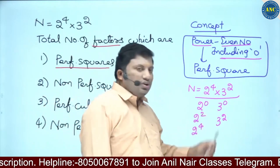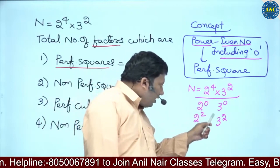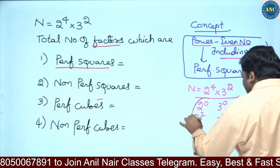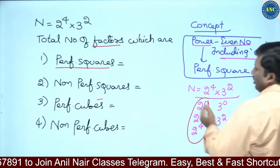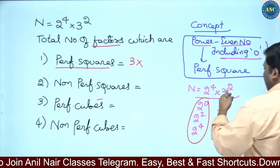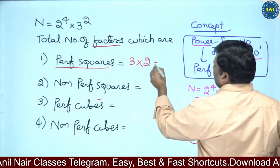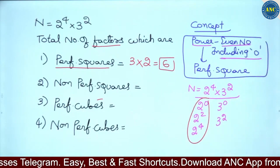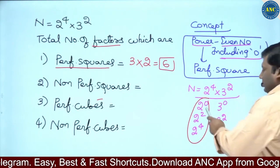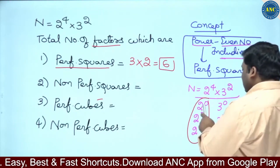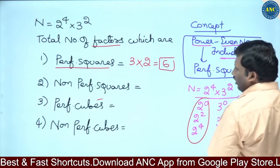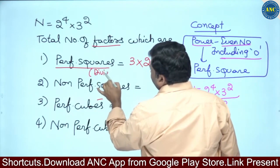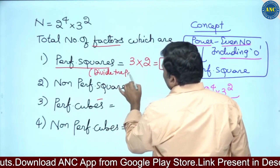4 × 9 = 36 is a perfect square; 16 × 1 = 16 is a perfect square; 1 × 9 = 9 is a perfect square. For 2⁴, there are 3 cases (powers 0, 2, 4). For 3², there are 2 cases (powers 0, 2). So 3 × 2 = 6 total factors are perfect squares. The shortcut: divide the power by 2 and add 1.